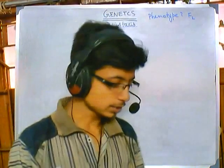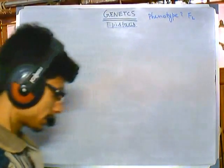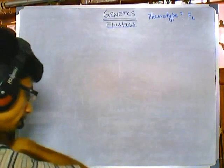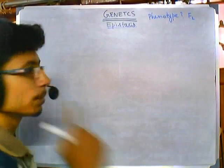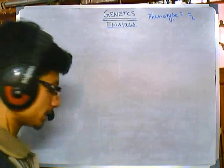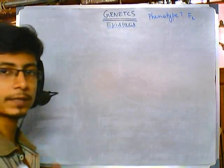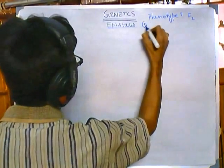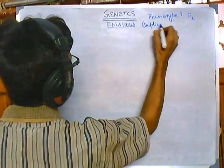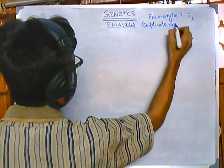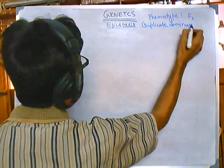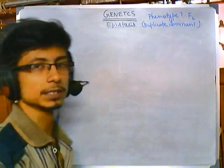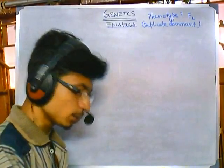Let's talk about another example of epistatic gene problems. In this case we'll be looking at duplicate dominant epistasis. We have already seen the example of recessive epistasis, so now let's talk about duplicate dominant — meaning two genes which are both of the dominant epistatic type.